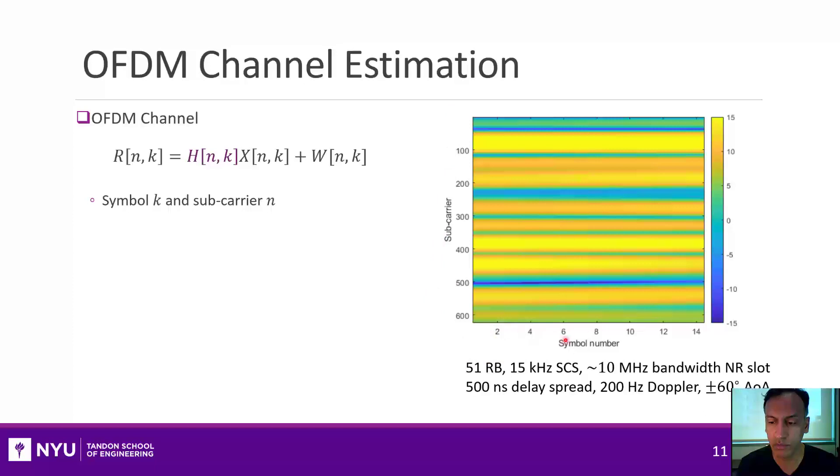So just shown in this plot to the right is an example of an OFDM channel over about a 10 MHz bandwidth with a small amount of Doppler, so it doesn't change much in time, but you definitely see that variation in frequency in this case here.